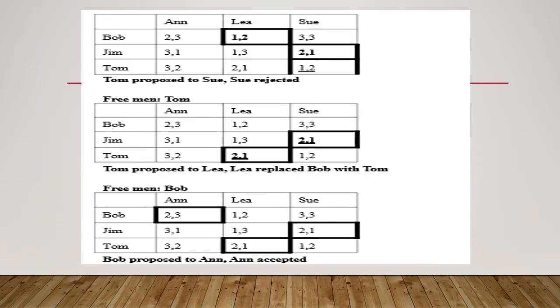And then the one left out is Tom. Tom's first preference is Sue, so he is proposing to Sue. But Sue's second preference is only Tom, so she is rejecting. So he is going for the second preference.